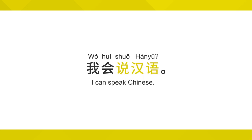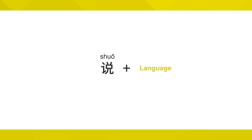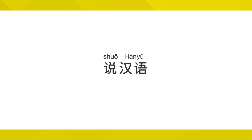说汉语 means to speak Chinese. 说 is the verb for 'to speak.' 说 plus a language means to speak that language. For example, 说汉语 means 'speaking Chinese' or 'to speak Chinese.'